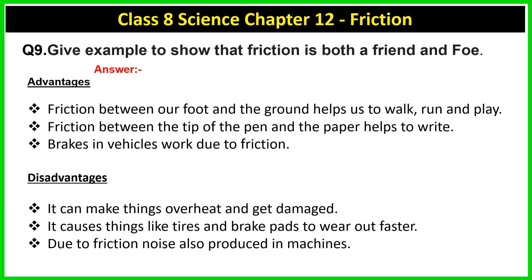Question 9: Give examples to show that friction is both a friend and foe. Friend means advantages; foe means disadvantages. Advantages: friction between our foot and the ground helps us to walk, run and play. Friction between the tip of the pen and the paper helps us to write. Brakes in vehicles work due to friction.